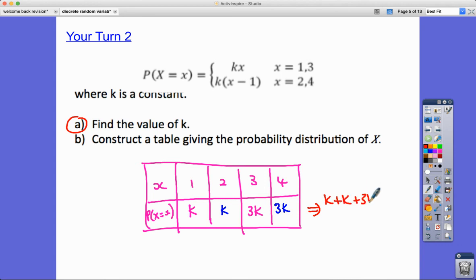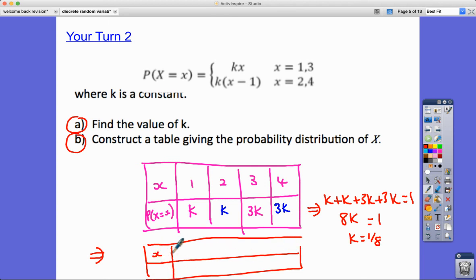I guess what they want me to do now in part B is to improve upon this probability distribution because now I actually do know the value of k. So I'm going to rewrite it out. 1, 2, 3, and 4. I know that k is equal to one-eighth. So the probability of these is going to be one-eighth and one-eighth. And then here it's going to be 3 times one-eighth, which is three-eighths. And that's part B done.